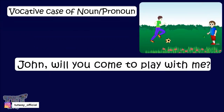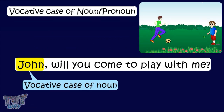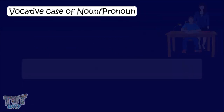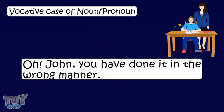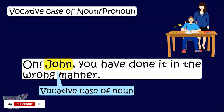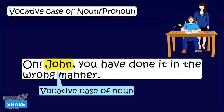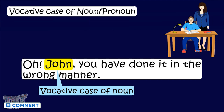John, will you come to play with me? Here too, 'John' is in the vocative case. Oh John, you have done it in the wrong manner. In this sentence, the word 'John' is in the vocative case as it's the name of the person we are talking to. So the exact naming words are the nouns that are in the vocative case.